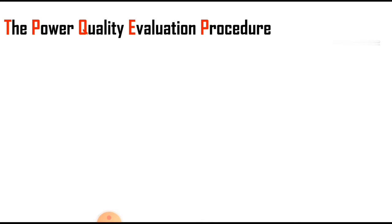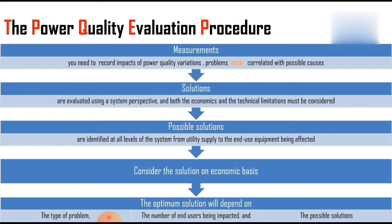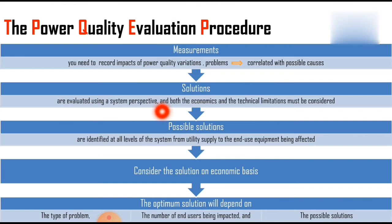This evaluation procedure consists of measurements, possible solutions, and an optimum solution considered on an economic basis. Regarding measurements, you need to record the impact of power quality variations. These problems are correlated with possible causes. When it comes to solutions, they are evaluated using a system perspective, and both the economics and technical limitations must be considered.